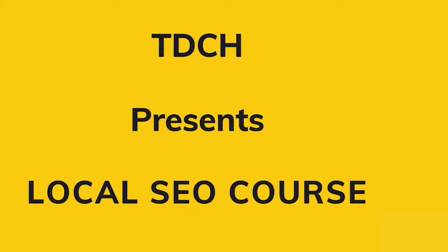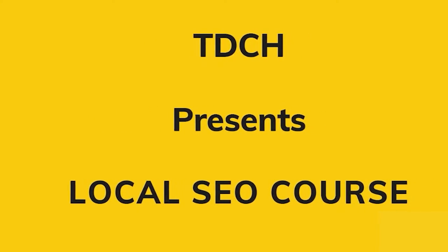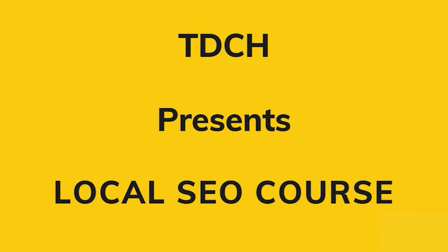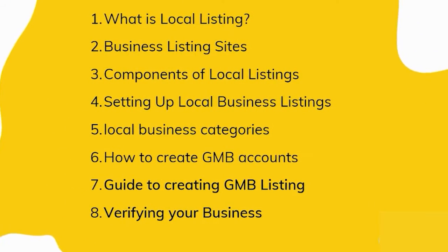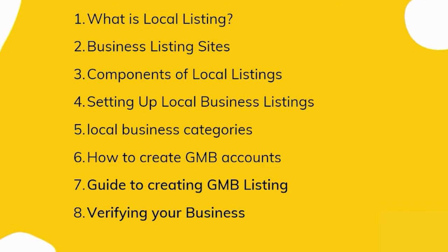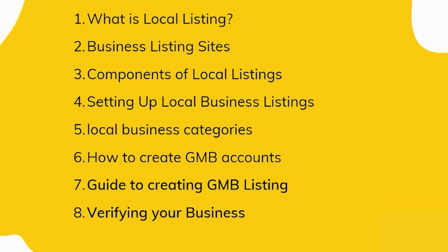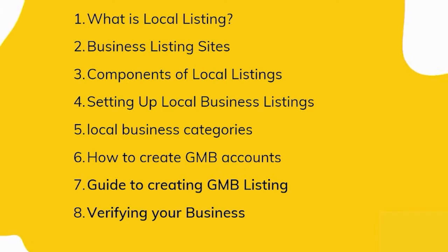Today on this video we have created a local SEO course. In the completion of the series of local SEO course, this is the third chapter. This course is designed and developed by researchers of the TDCH team. In this third chapter on local listing, we have covered eight points: what are local listings, business listing sites, components of local listing, how to set up your local business, local business categories, how to create GMB accounts, guidelines for Google My Business listing, and how to get verified using multiple tactics and methods.